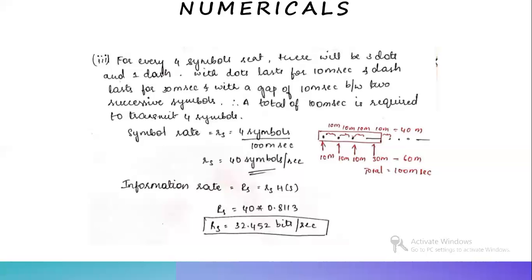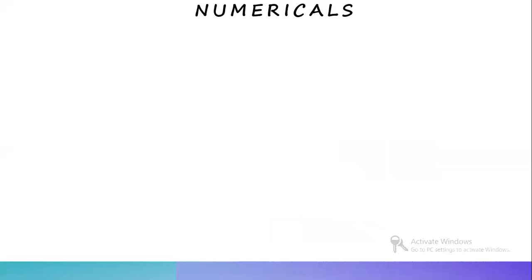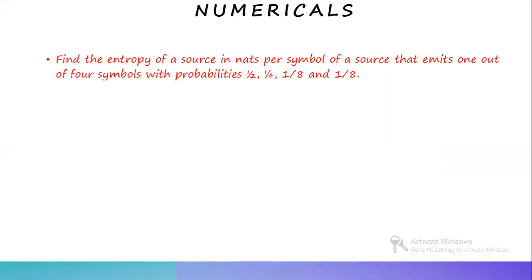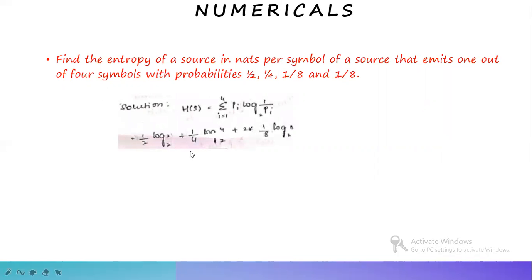Next problem: find the entropy of a source in nats per symbol that emits one of four symbols with probabilities 1/2, 1/4, 1/8, and 1/8. First calculate the normal entropy in bits. H(S) equals summation i equal to 1 to 4 of Pi·log(1/Pi) base 2. Substituting: 1/2·log2 + 1/4·log4 + 2·(1/8)·log8, all base 2. Solving gives H(S) equal to 1.75 bits per symbol.